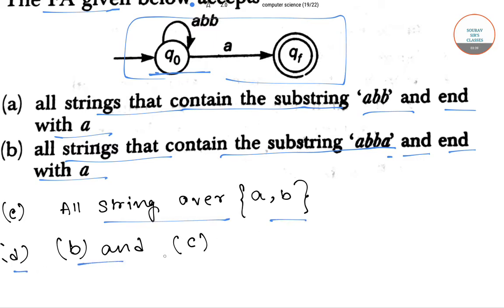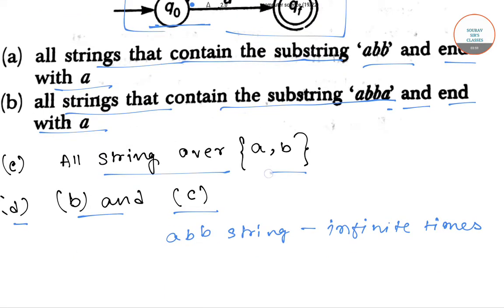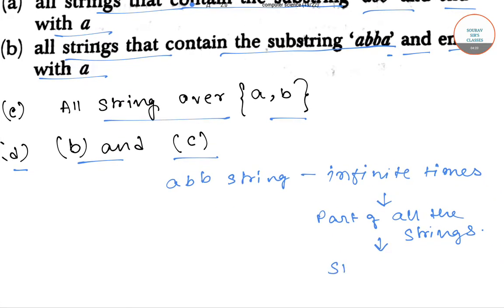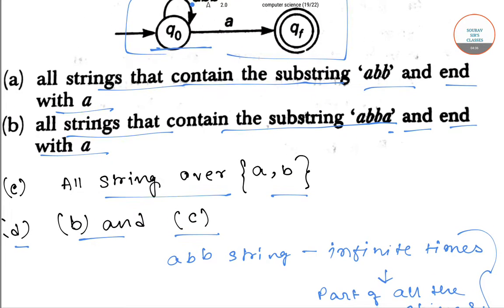Since the substring ABB may occur finitely many times, it will be part of all the strings. All the strings will end with A, based on this transition state diagram.